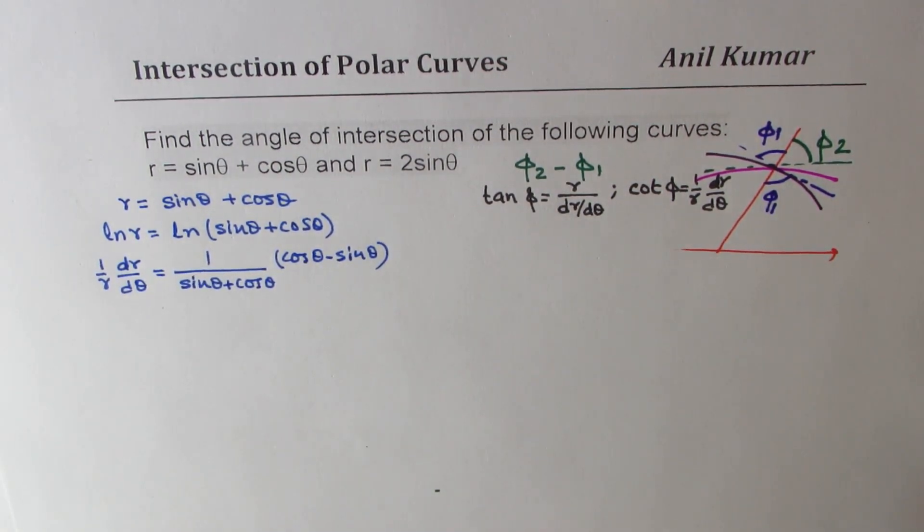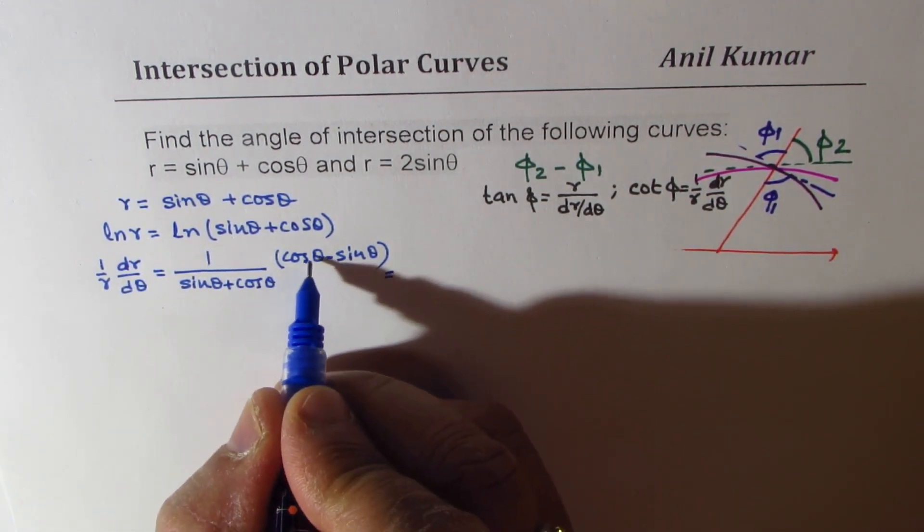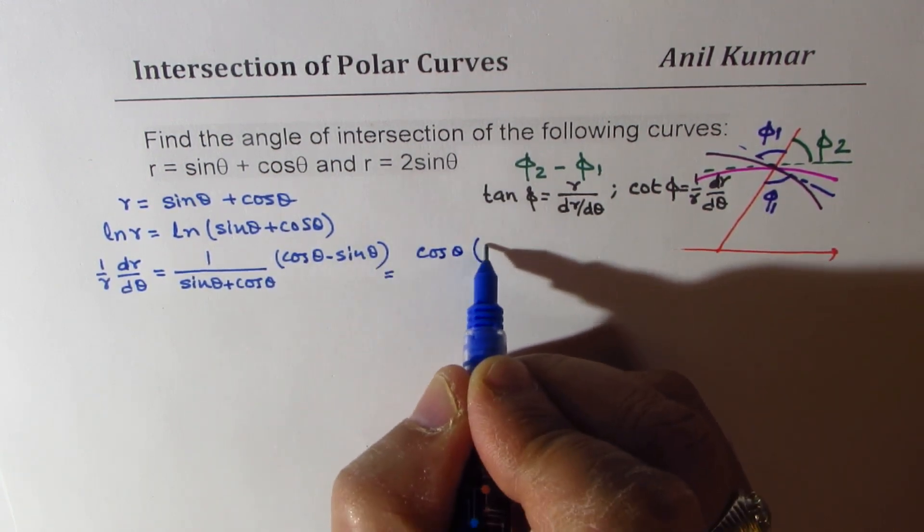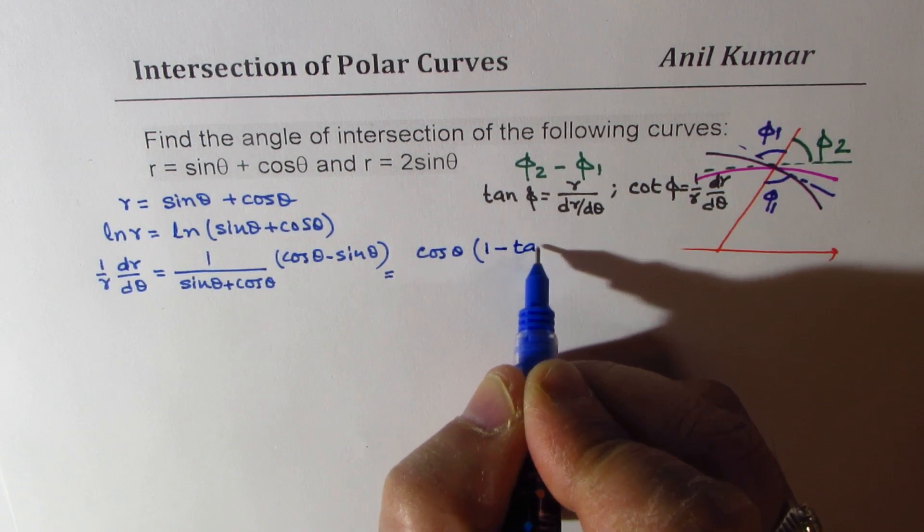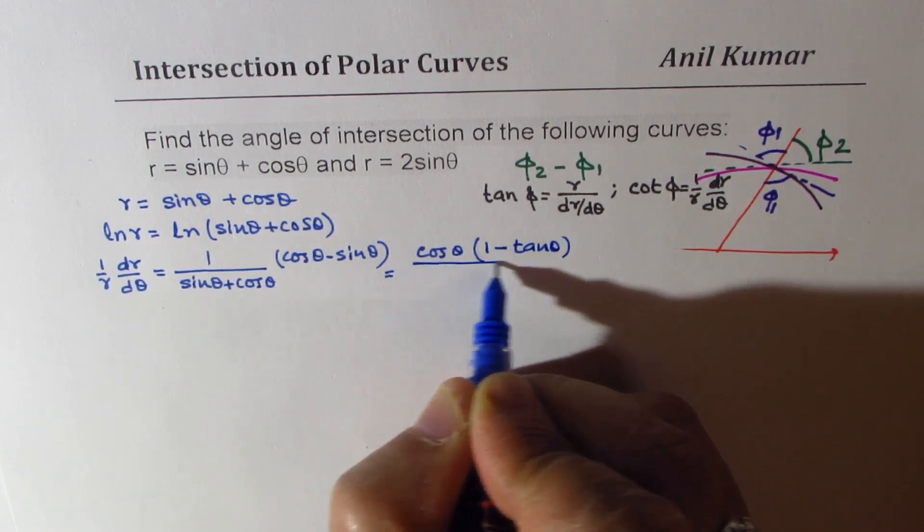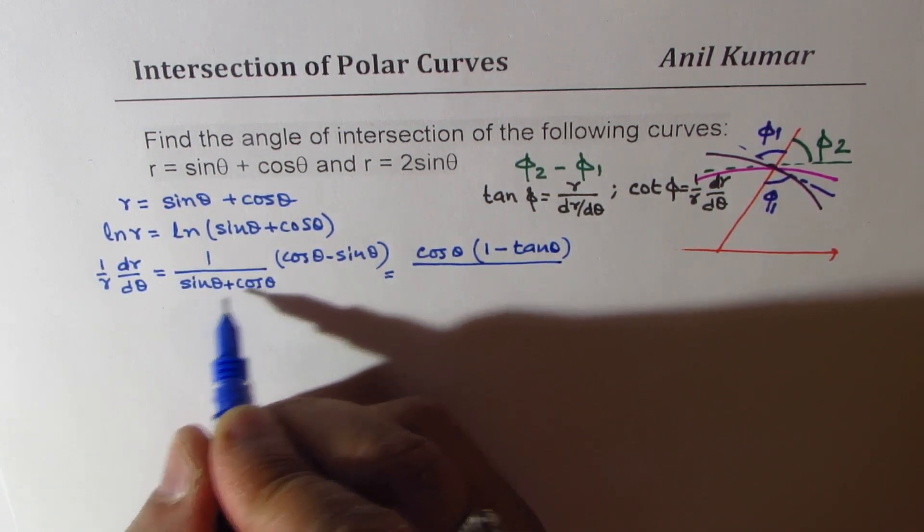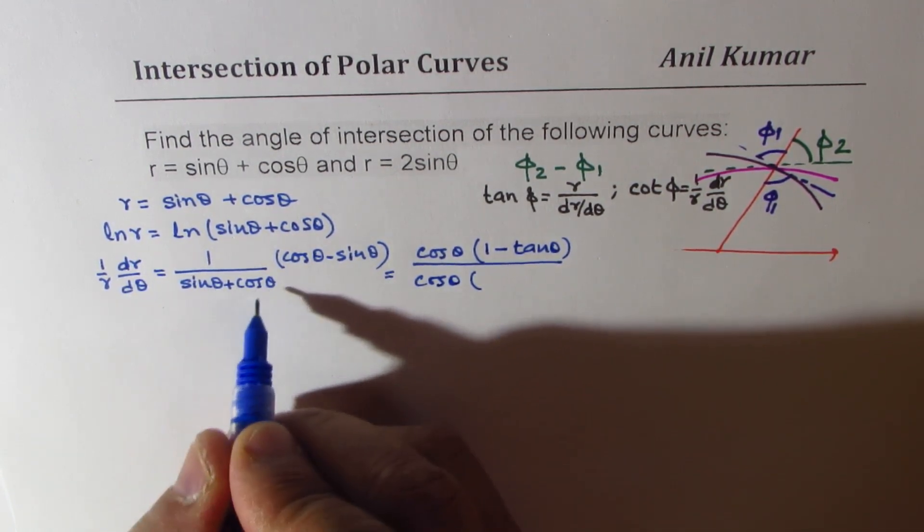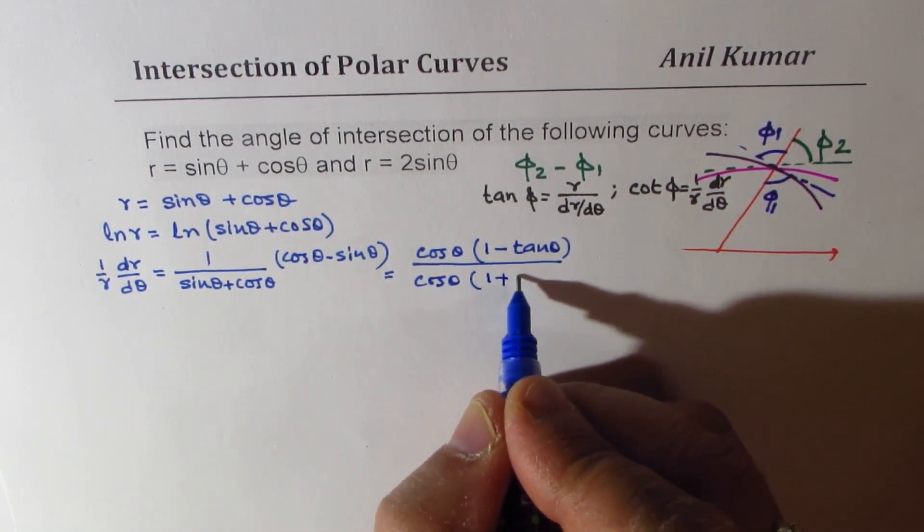Now, to simplify this, we could take cosine theta common, and we'll get 1 minus tan theta. In the denominator also, we can take cosine theta common, and switching this over, we get 1 plus tan theta.